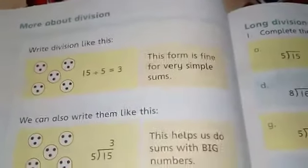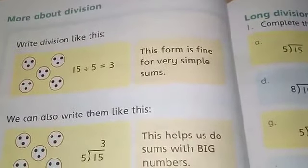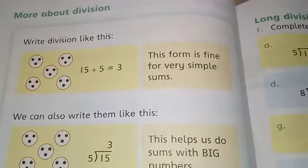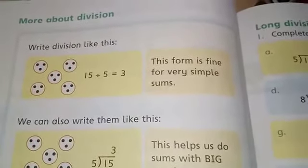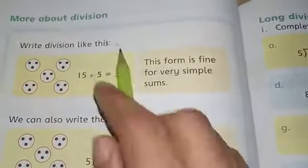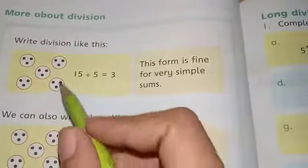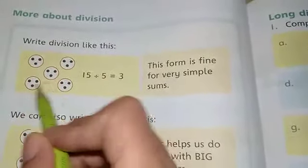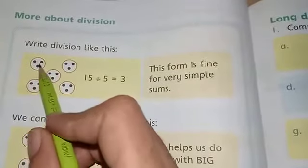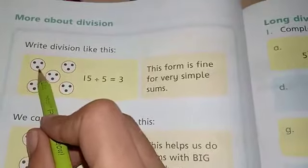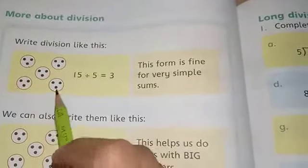Let's start our topic. Topic is More About Division, right? Division like this. Abhi humne division ko is tarah se karna hai (Now we have to do division this way). You have five circles—one, two, three, four, five. You have five circles and in each circle there are three small dots.